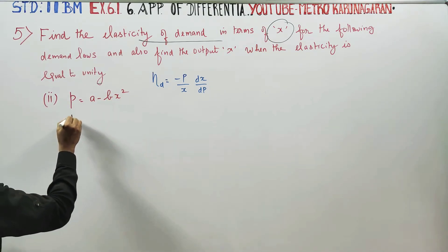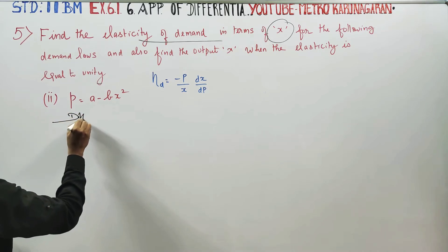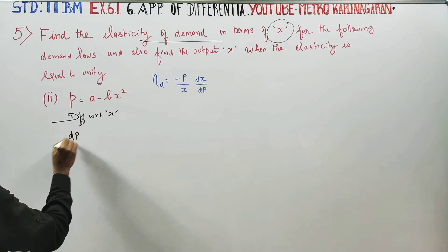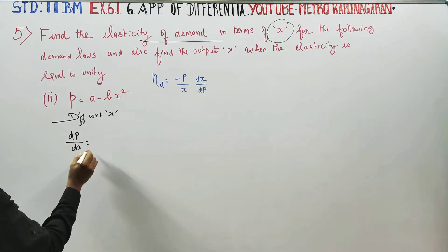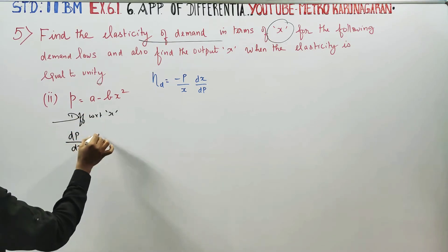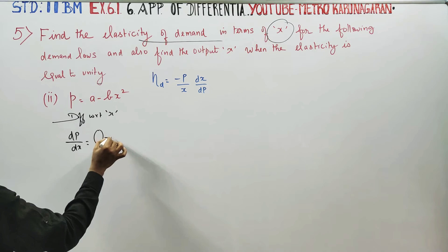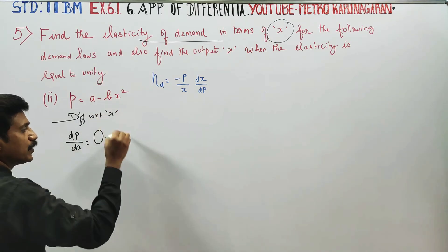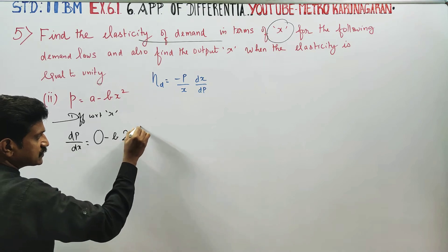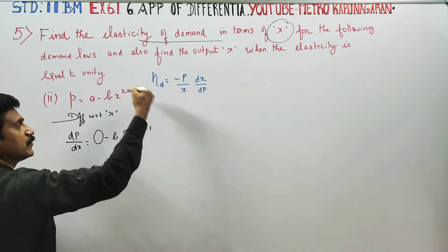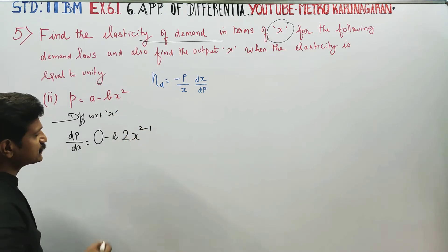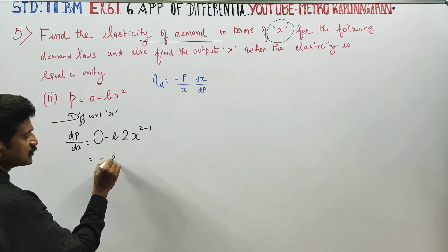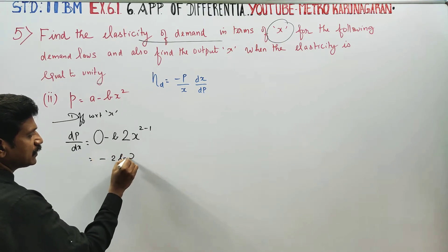I am going to differentiate P with respect to x. dp by dx: A is a constant, so its derivative is 0. For the B times x square term, using the power rule, the derivative is minus 2Bx. So dp by dx is equal to minus 2Bx.